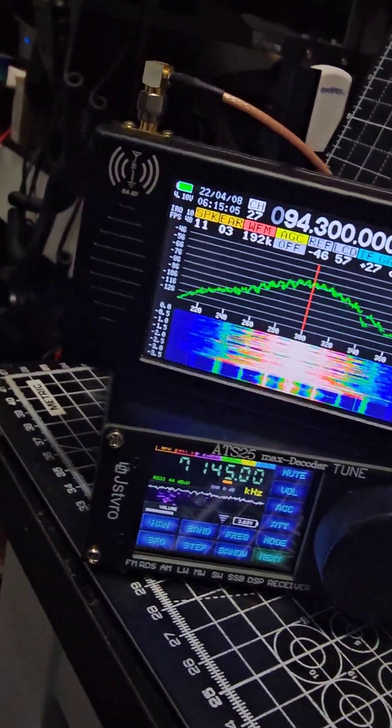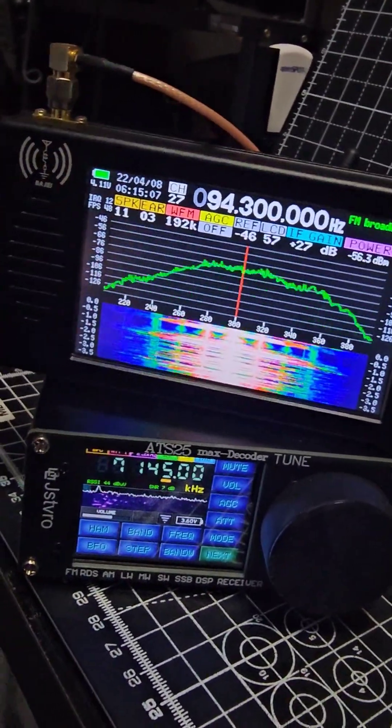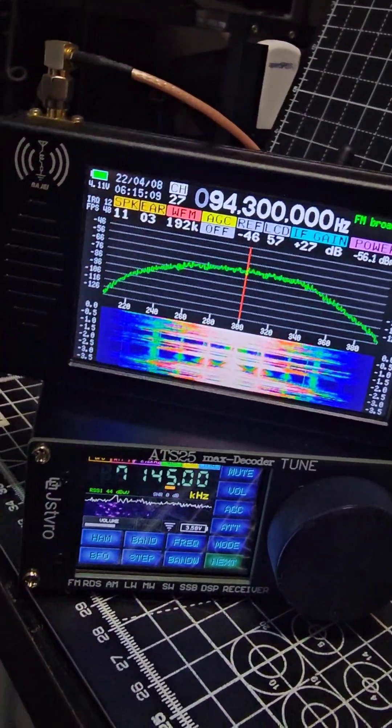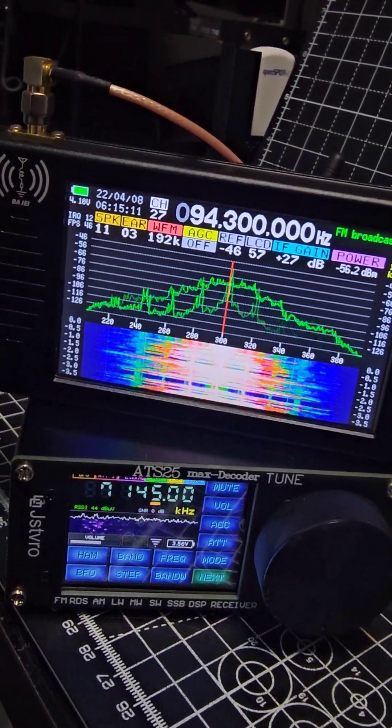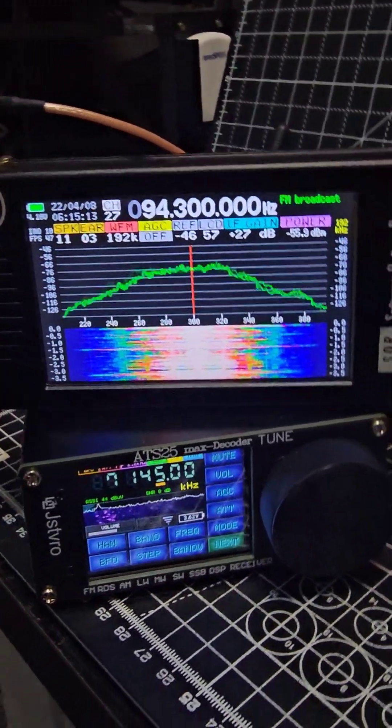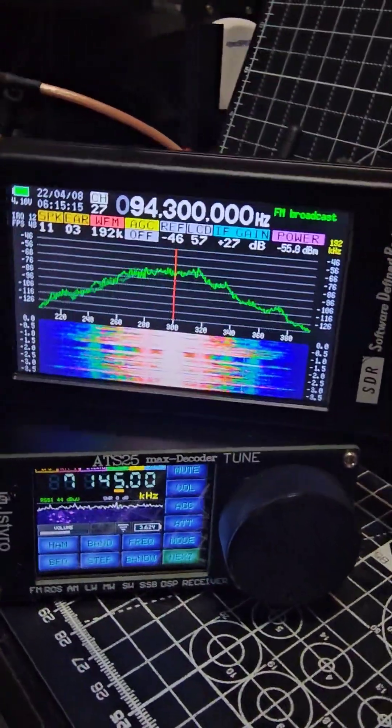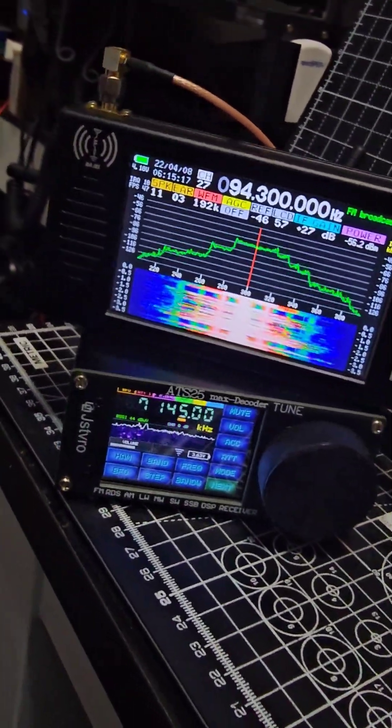Both of these are budget devices. They're both about £80. This one decodes FT8. The other one receives airband, also HF 6m broadcast. It has a 4.3 inch customizable screen. They're both fun devices.